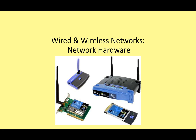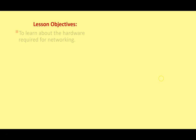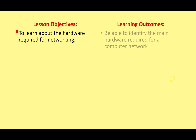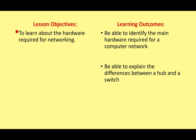Hello everyone and welcome to the fourth video in this series on wired and wireless networks. Today we're going to be looking at network hardware. Our objective is to learn about all the different hardware required for networking, identify the main hardware required by a computer network, and be able to explain the differences between a hub and a switch - two important pieces of equipment we'll look at in detail.